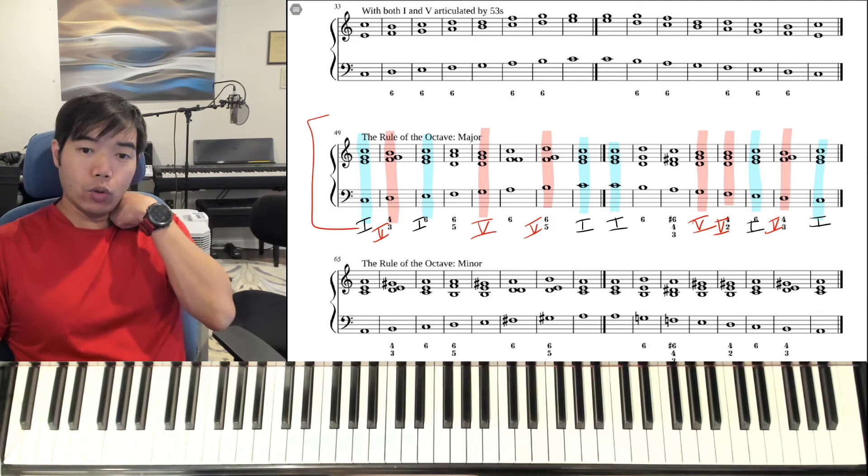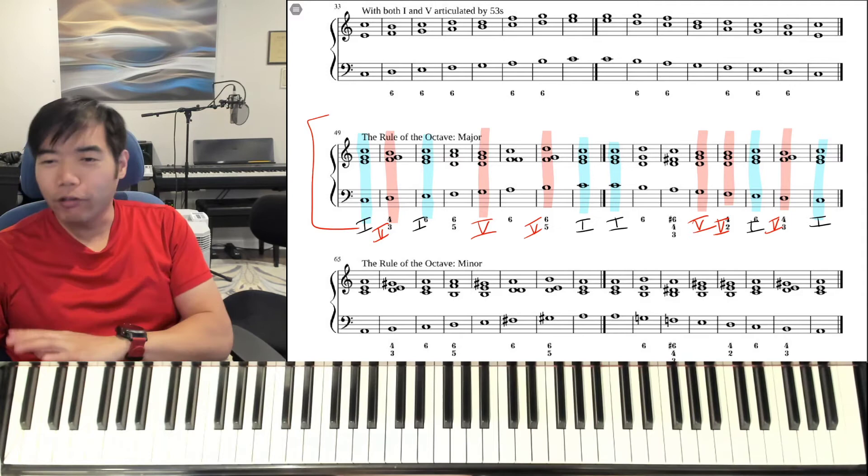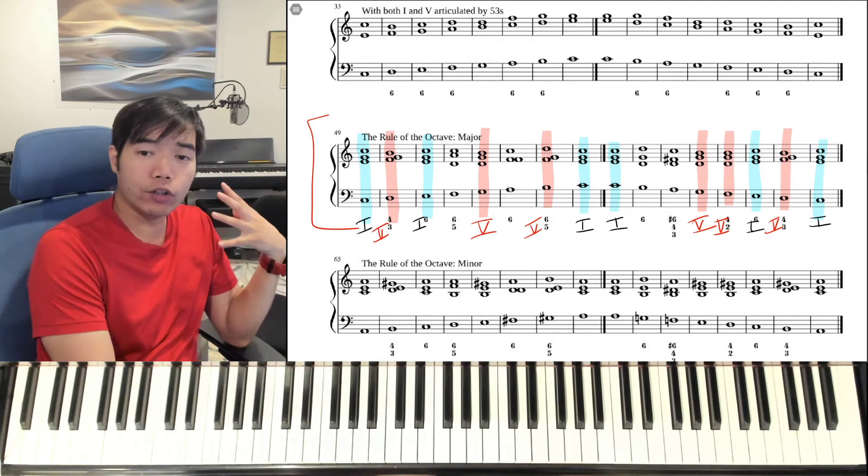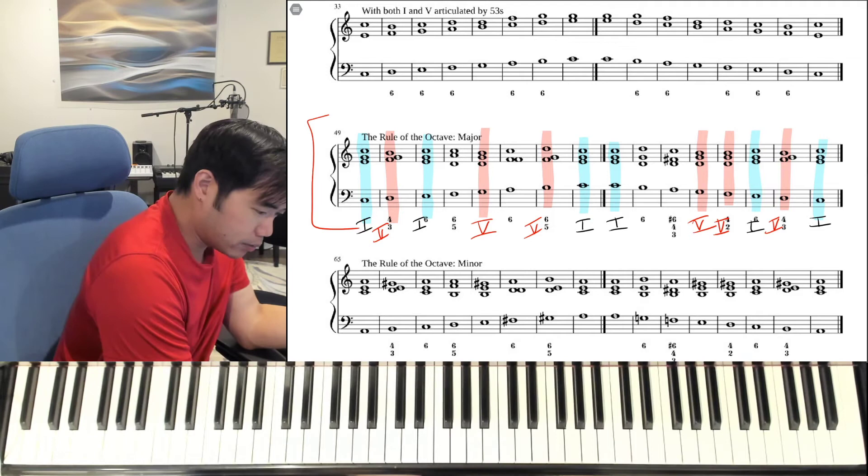All right? So now we've covered everything except for four chords. We've covered everything except for four chords. And of course, we're going to be using the five and the one as much as possible. So we've already established all the one chords. We've covered almost all of the five chords.